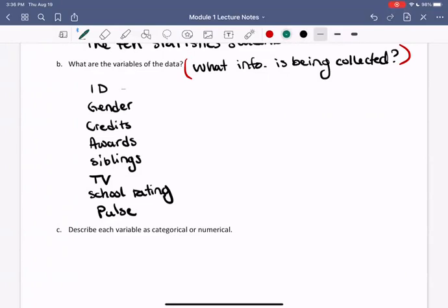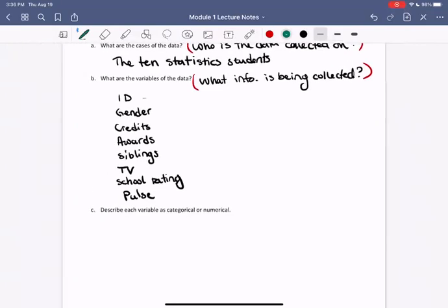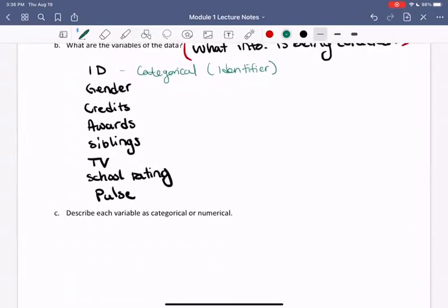All right, and once you've had a moment to pause the video, let's look over it together. All right, so we'll notice that ID, well, the ID number is not numerical, even though it just comes to us in a number. But it's more of an identification or an identifier of each case. So ID is categorical.